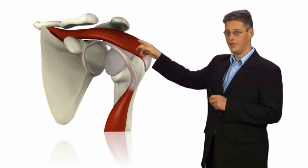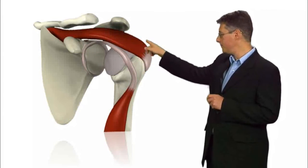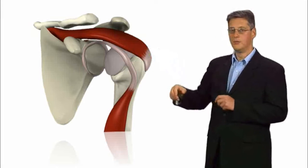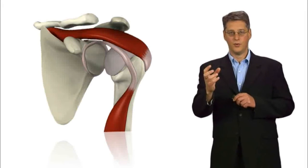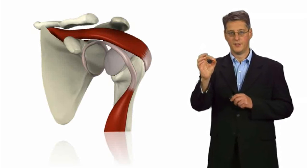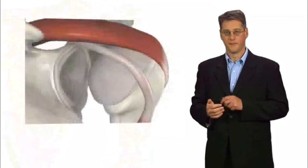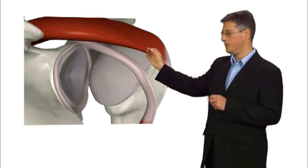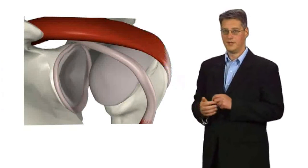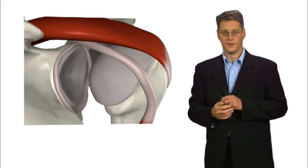The socket or the glenoid is surrounded by this labrum which is like a washer that gives stability to the shoulder joint, to the socket of the joint. And here you see a close-up view showing you the labrum of the joint going all around the shoulder.